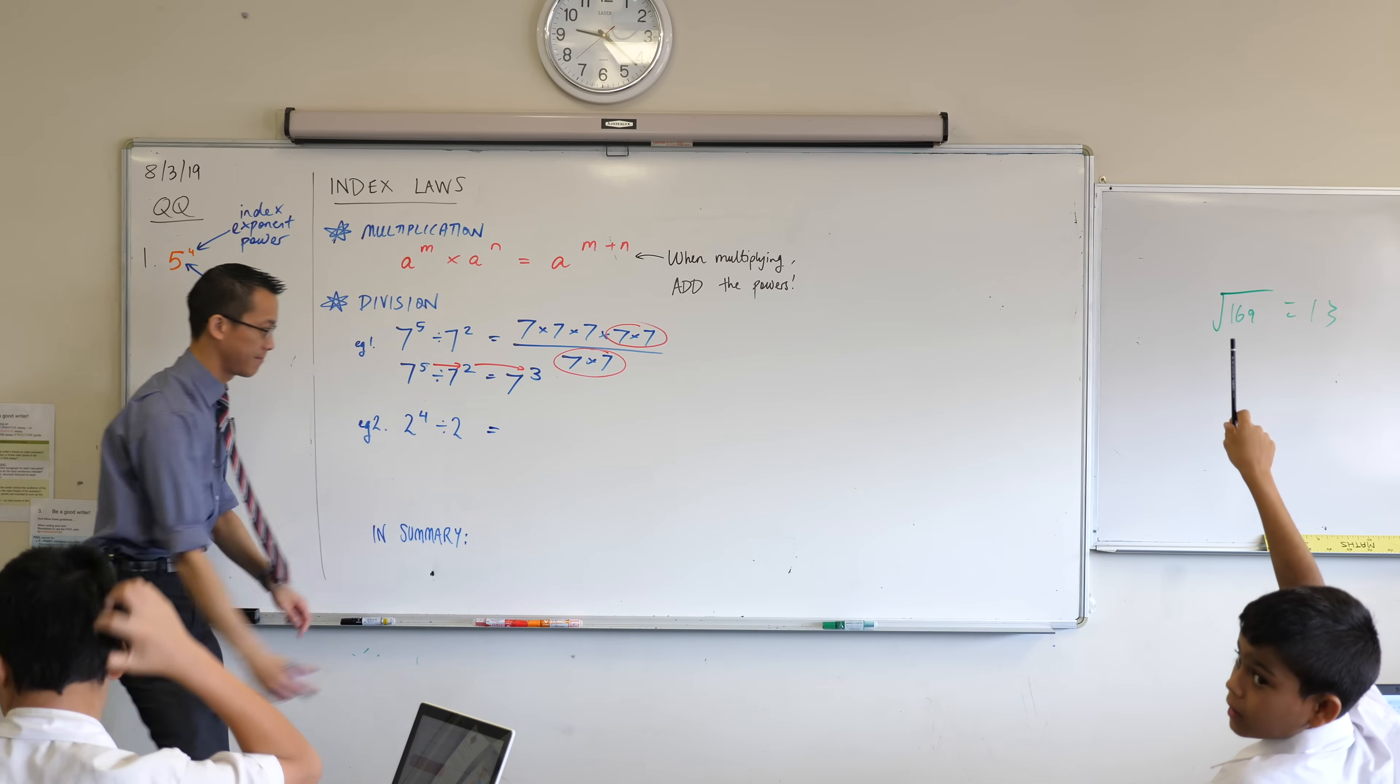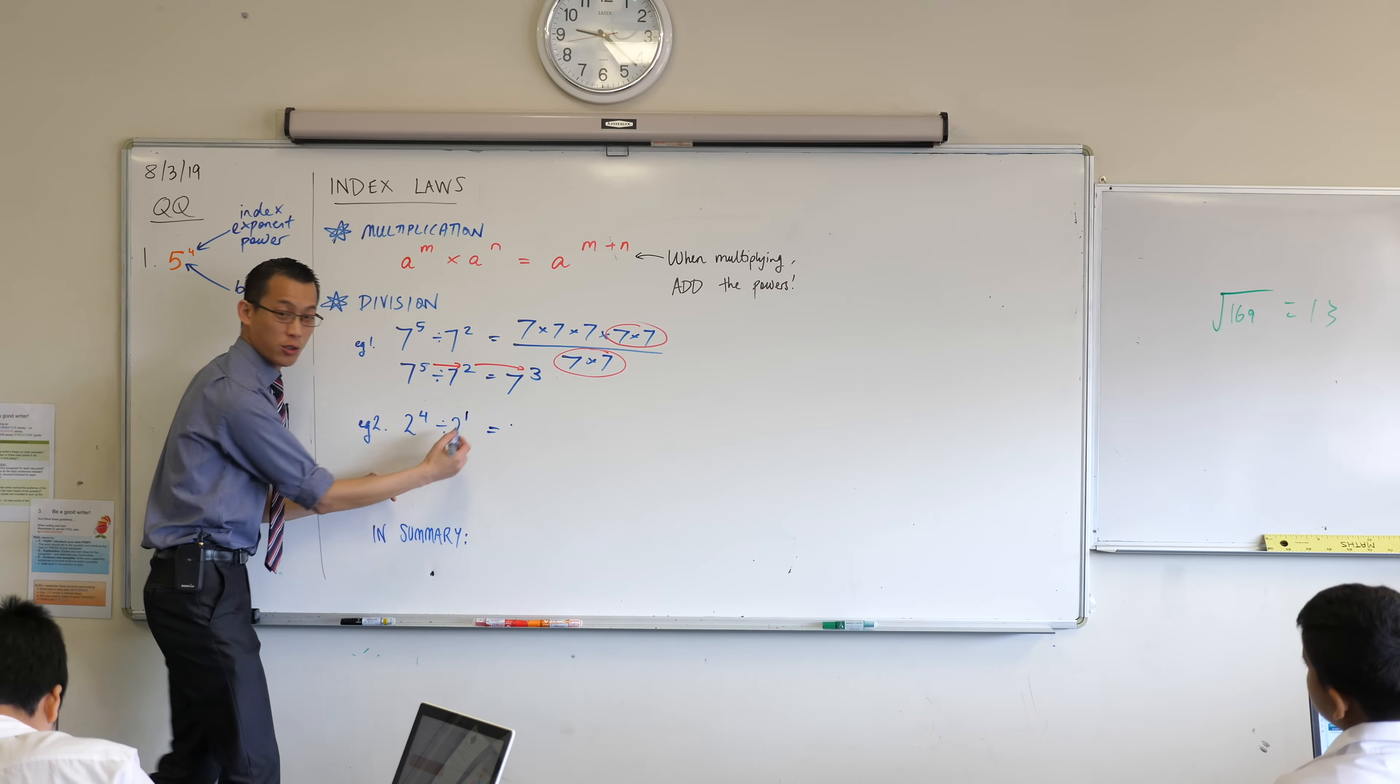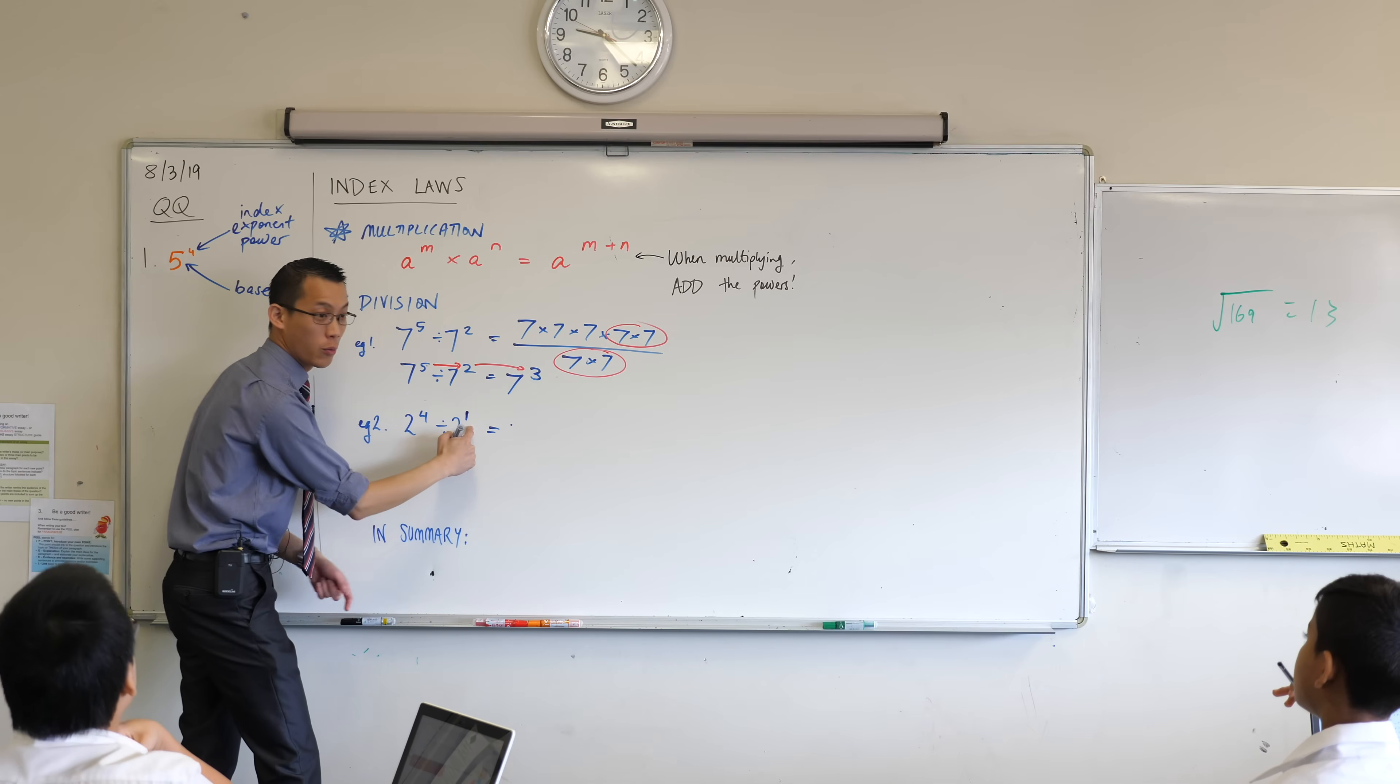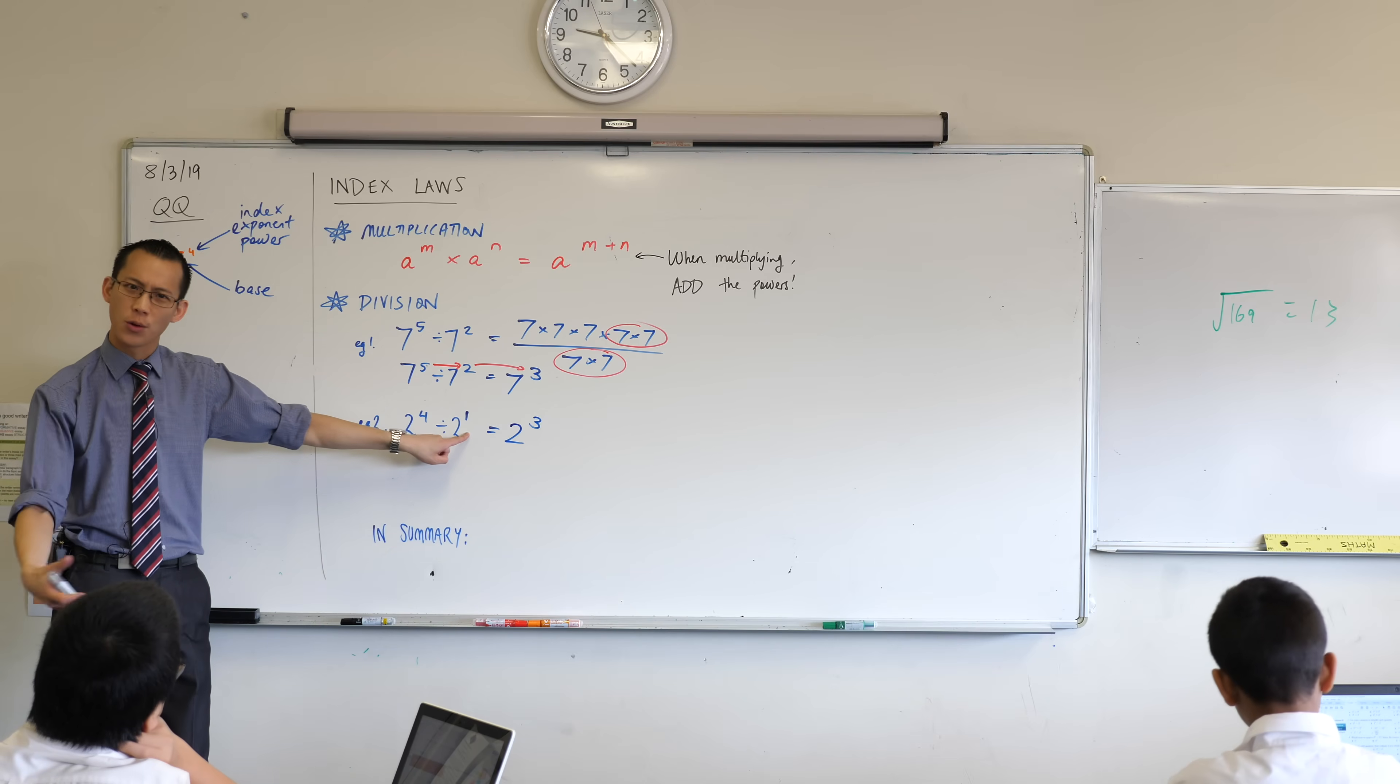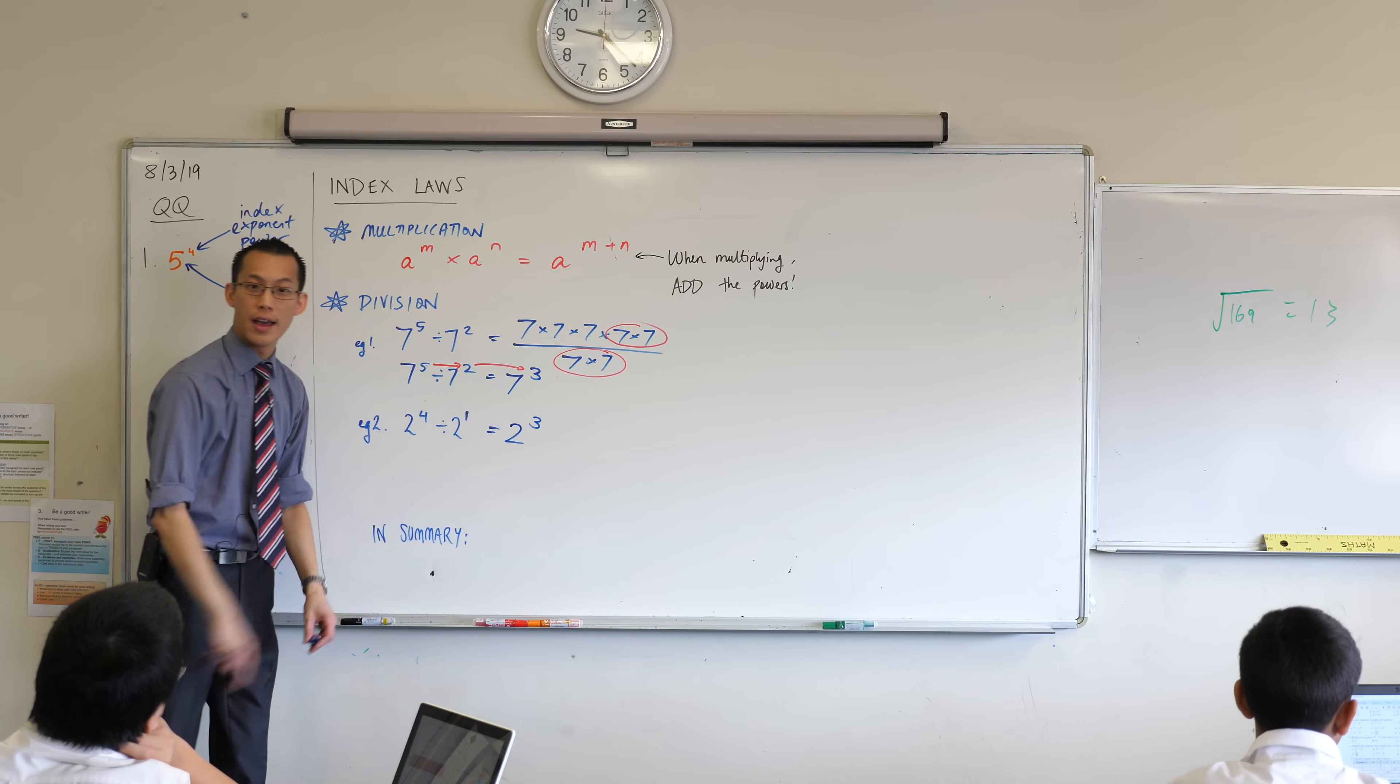Ah, very good! So there's the first little sneaky thing—there's a 1 that's hiding there—and then what? 4 minus 1, which you can all tell me is—hooray!—2 cubed. So you do have to watch out for those sneaky little ones that are just kind of hanging out there invisibly. 4 take away 1 sure enough gives you 3.